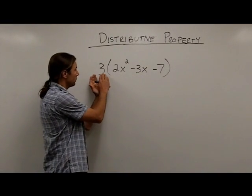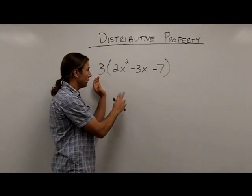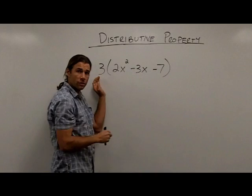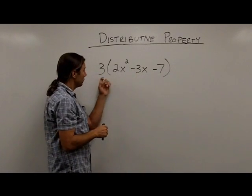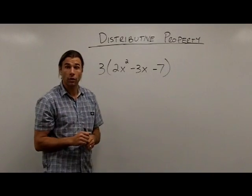In this case, this tells me to multiply this 3 times everything in this set of parentheses. Notice there are one, two, three terms in this set of parentheses. So I need to multiply this 3 times all three of those terms. The way we do this is just in an organized fashion.